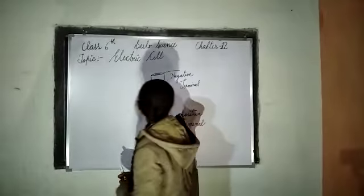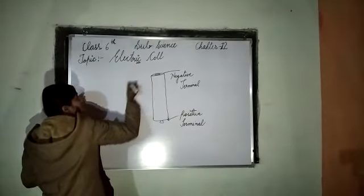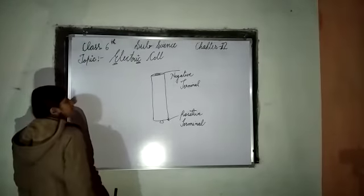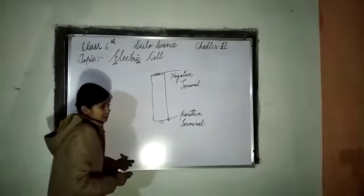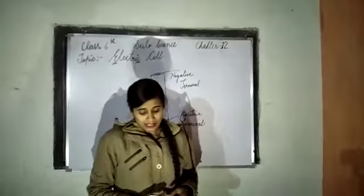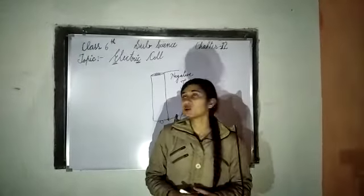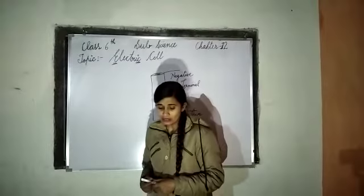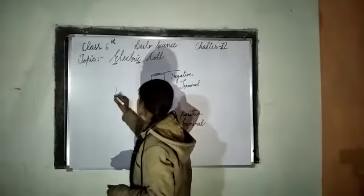What is a dry cell? An electric cell uses chemical energy to convert to electrical energy. This is done by the electric cell — used in devices like a torch, watch, clock, camera, and others. The most commonly used electric cell is the dry cell.